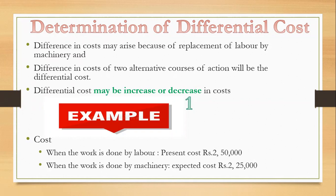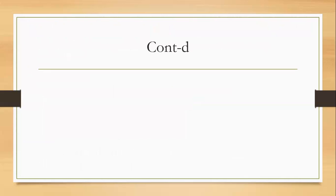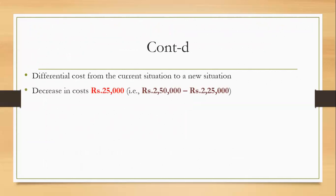For example, when the work is done by labor, the present cost is rupees 2,50,000. And when the work is done by machinery, the expected cost is rupees 2,25,000. The difference in cost from the current situation to a new situation is the differential cost. In this example, there is a decrease in cost by rupees 25,000, that is 2,50,000 minus 2,25,000.